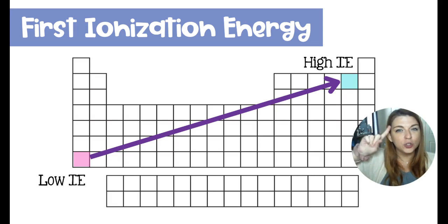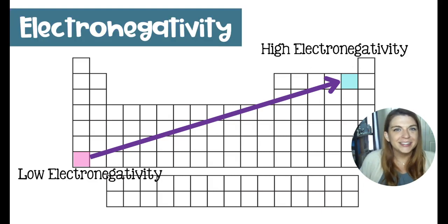The two go hand in hand. With a high electronegativity, you really, really, really want electrons. And your ionization energy is going to be high because you really don't want to give them away. So again, your high electronegativity is going to be focused in the fluorine corner and your low electronegativity is going to be in your francium corner. There are two Fs on the periodic table.